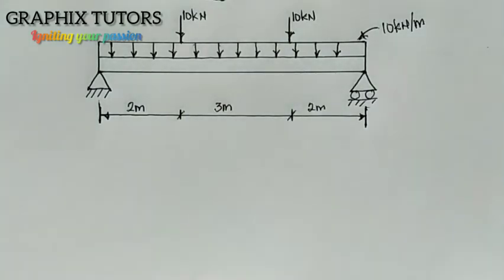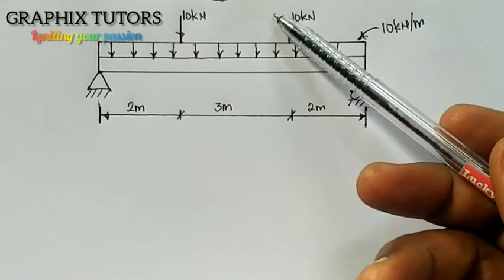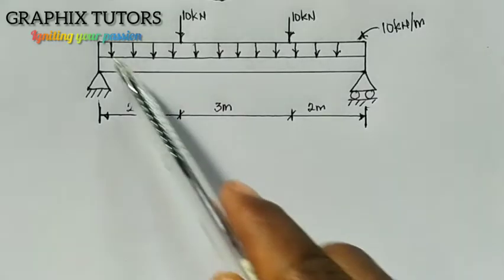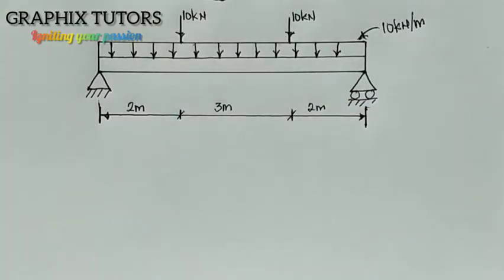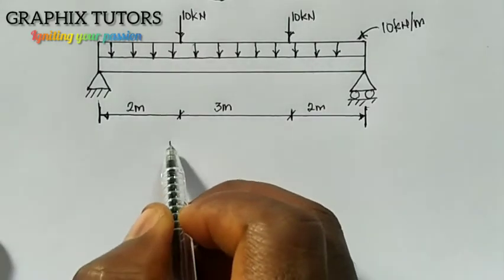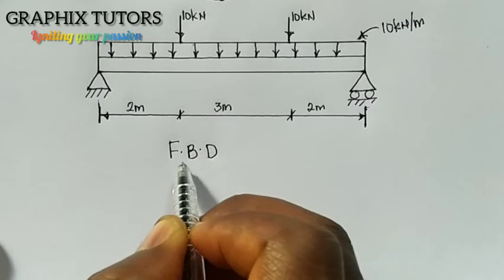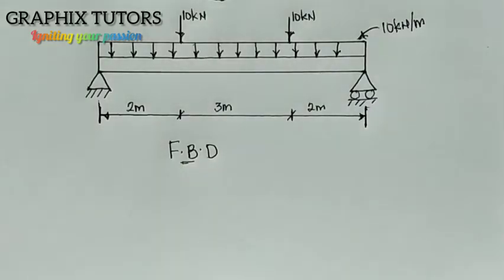We want to analyze this beam and see what the reactions are, because whenever there is a load there must surely be a reaction. Let's see how the supports are reacting to this load. The first thing you have to do is draw your free body diagram, where you can transform this UDL into a point load, and then analyze. The FBD is a diagram used to show all the external forces acting on an object.